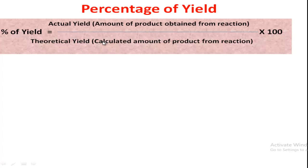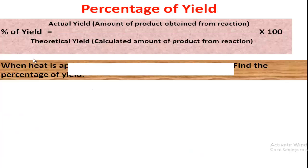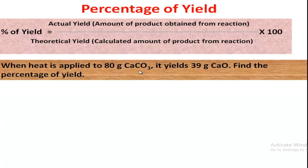For example: when heat is applied to 80 grams of calcium carbonate, it yields 39 grams of calcium oxide. Find the percentage of yield. Here calcium carbonate is the reactant, and it produces 39 grams of calcium oxide and carbon dioxide as products. The 39 grams of calcium oxide is the actual yield — the amount of product obtained from the reaction.